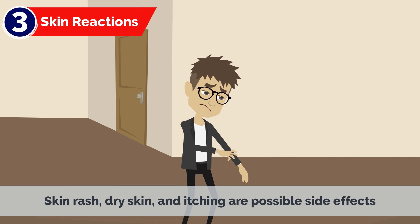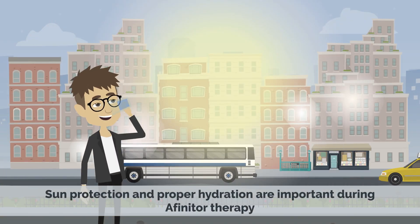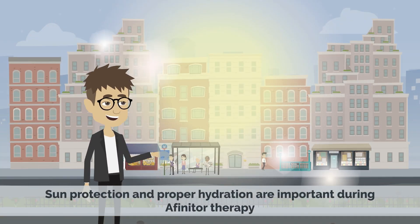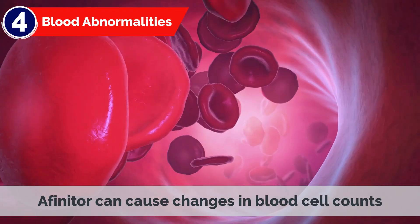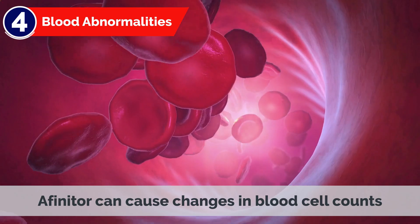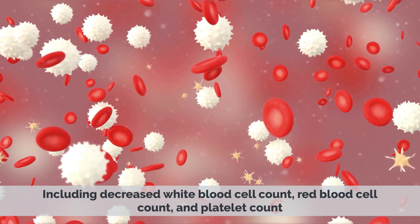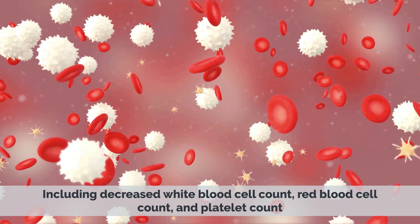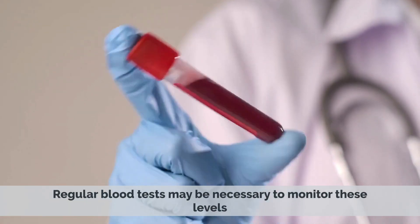3. Skin Reactions: Skin rash, dry skin, and itching are possible side effects. Sun protection and proper hydration are important during Affinitor therapy. 4. Blood Abnormalities: Affinitor can cause changes in blood cell counts, including decreased white blood cell count, red blood cell count, and platelet count. Regular blood tests may be necessary to monitor these levels.